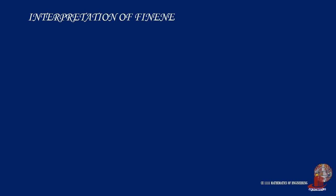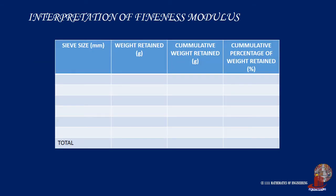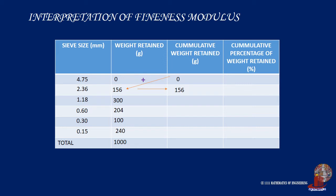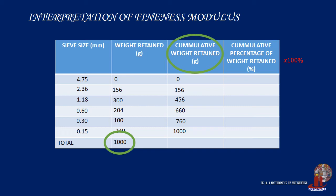How do we compute the fineness modulus and what does it mean? Suppose we made a test with the following sieve sizes yielding different weights. The cumulative weight retained is solved by copying the first weight retained for the first sieve size, then adding the succeeding weights retained — for example, 0 plus 156 for the second value; 156 plus 300 equals 456 for the next; then 456 plus 204 equals 660, and so on until the last sieve size. The cumulative percentage of weight retained is calculated as cumulative weight retained divided by total weight, multiplied by 100%. Finally, take the total of the last column and divide by 100 to get the fineness modulus, which for this sample is 3.03.